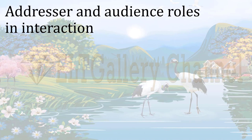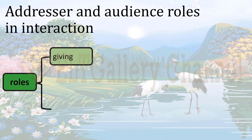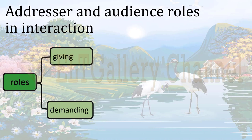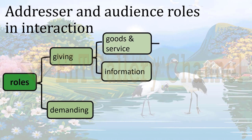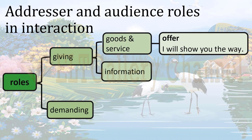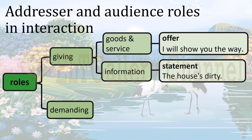We have different roles between addresser and audience. The first role is giving — the addressee can give and the audience receives. Or the addressee can demand, and then the audience gives what the addresser demands. What the addresser can give is: first, goods and services, and second, information. The addresser gives goods and services like in the sentence 'I will show you the way' — here the addresser wants to give a service. Or in the sentence 'The house is dirty,' the addresser tells the audience that the house is dirty.